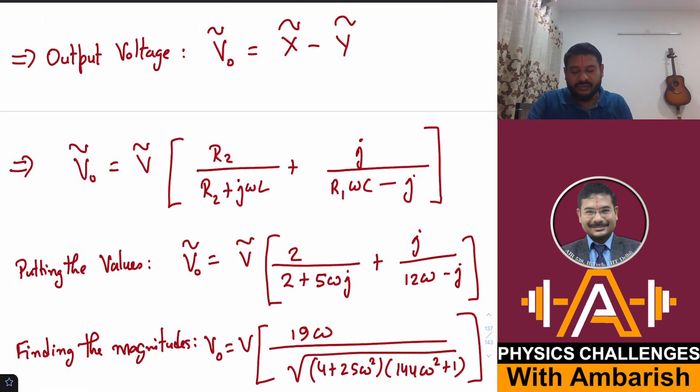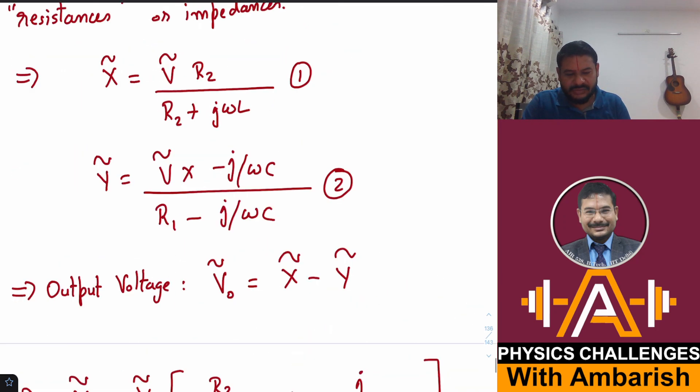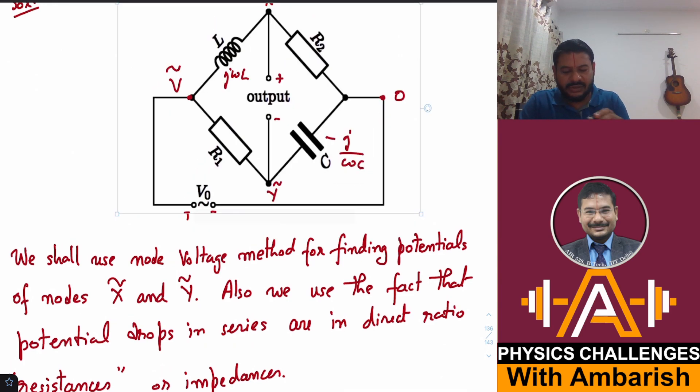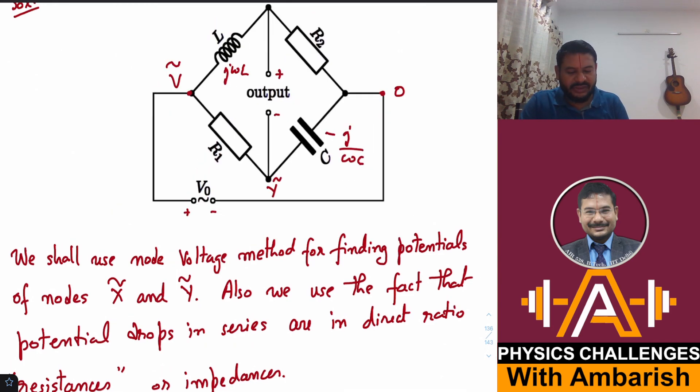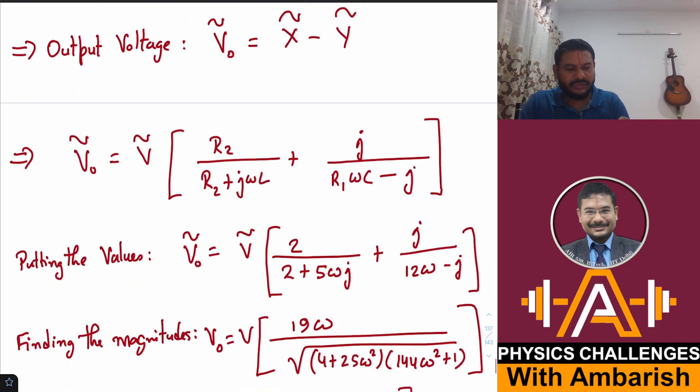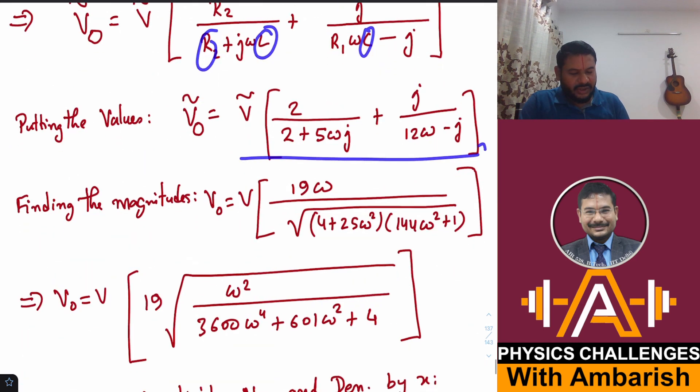I am calling this V_O tilde, not to be confused with V₀. This is V₀ and let me call it V_O tilde to avoid confusion. V_O tilde is the output voltage. Putting in the values of R2, L, and C, this is what you get by simplification.